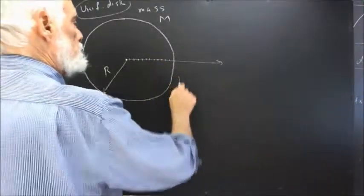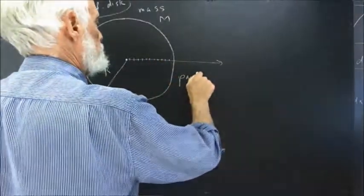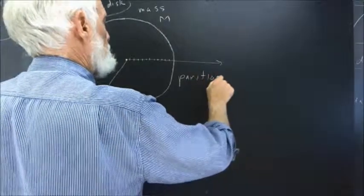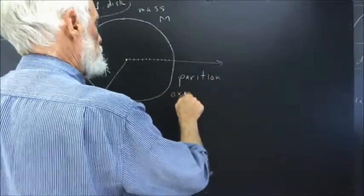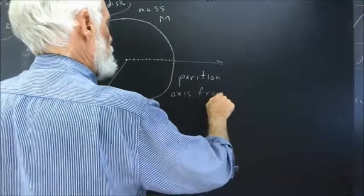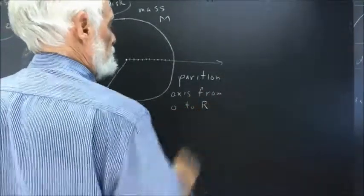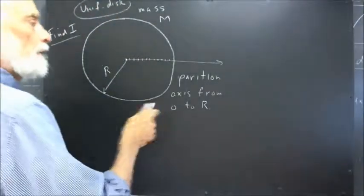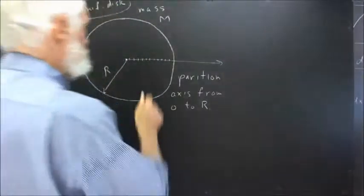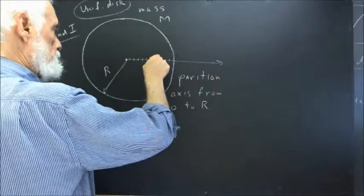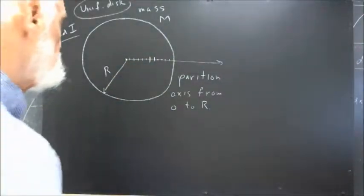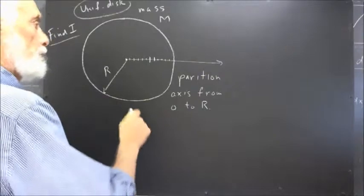So partition the axis from zero to R. We take a typical interval in that partition, and that's going to be our ith interval.